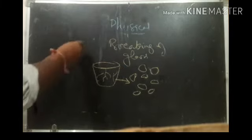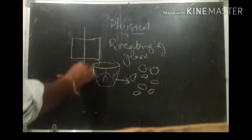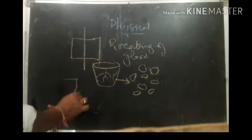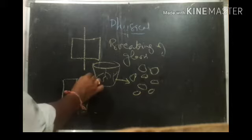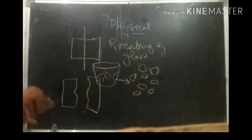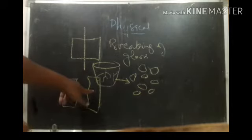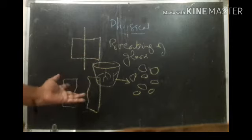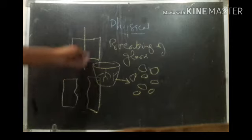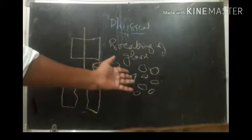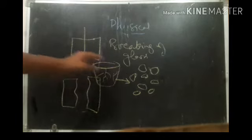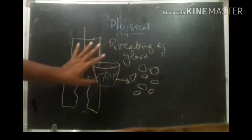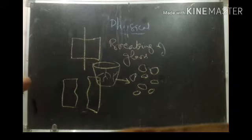Even cutting paper is similar — if you cut paper into two parts, they become two pieces of paper. The size and shape changed, but no other properties changed and no new substance is formed. So cutting paper and breaking glass are both called physical changes.